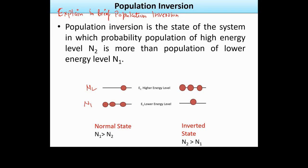But what do we want? Stimulated emission. When will it happen? When more atoms are in the higher energy state. The number of atoms in the higher energy state becomes greater than the number of atoms in the lower energy state — we call this the inverted state. When the population, which was in the lower energy state, becomes inverted, this is called population inversion.